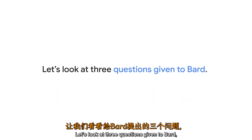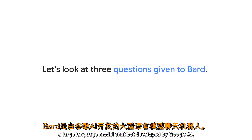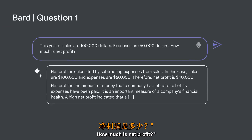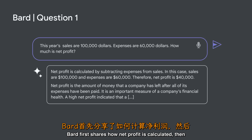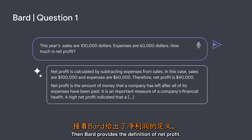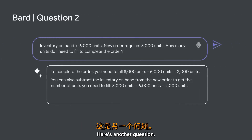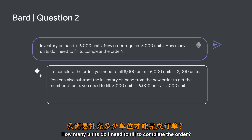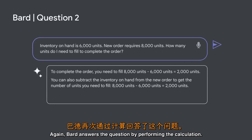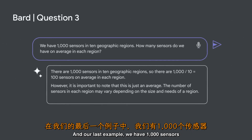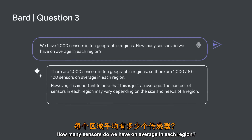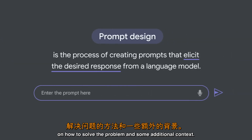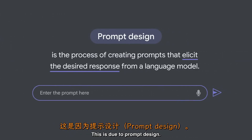Let's look at three questions given to Bard, a large language model chatbot developed by Google AI. Question 1: This year's sales are $100,000, expenses are $60,000 — how much is net profit? Bard first shares how net profit is calculated, performs the calculation, then provides the definition of net profit. Question 2: Inventory on hand is 6,000 units, a new order requires 8,000 units — how many units do I need to fill to complete the order? Bard answers by performing the calculation. Question 3: We have 1,000 sensors in 10 geographic regions — how many sensors do we have on average in each region? Bard answers with an example on how to solve the problem and some additional context. In each question, a desired response was obtained — this is due to prompt design.